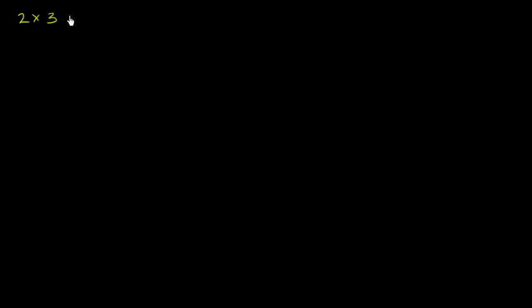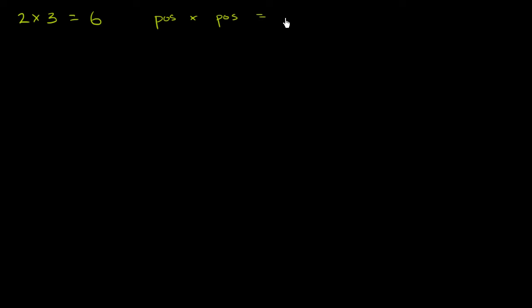We know that if we were to multiply 2 times 3, that would give us positive 6. Since we're going to start thinking about negative numbers in this video, one way to think about it is: a positive number times another positive number gives me a positive number. So if I have a positive times a positive, that will give me a positive number.